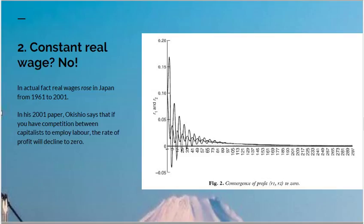Now let's look at the next point: a constant real wage. Okishio recognised, 40 years later, that there certainly hadn't been constant real wages in Japan. In his second paper, he does a simulation of what happens if you do not assume constant real wages and you assume that capitalists have to compete to employ labour as the amount of surplus value they invest goes up. He shows that the consequence of that is the rate of profit will decline to zero, which is a much better representation of what's happening in Japan.